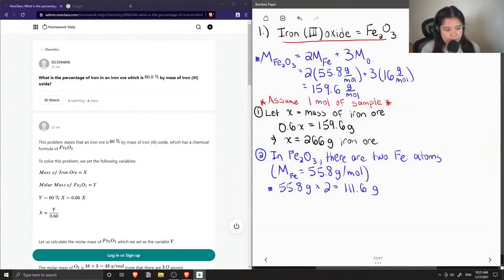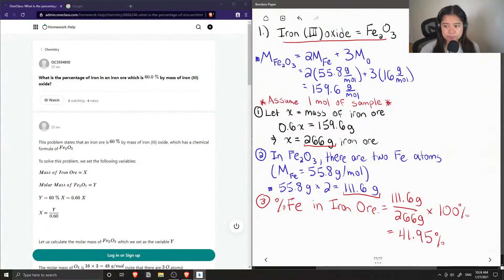So we know the mass of iron ore, which is 266 grams. And now we also know the mass of iron. So now step 3 is to find the percentage of iron in iron ore. So we take the mass of iron, which is 111.6 grams, and we divide that by the mass of iron ore, which is 266 grams. And if you multiply this by 100, we can get the percentage, which is 41.95%.